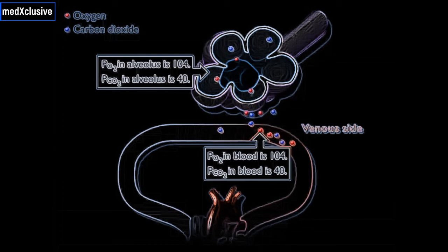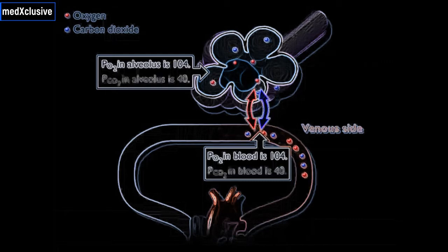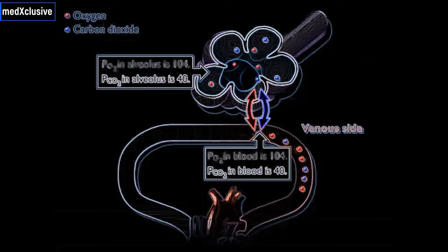Therefore, at the venous ends of the pulmonary capillaries, the PO2 in the blood and alveoli is 104 and the PCO2 in the blood and alveoli is 40.